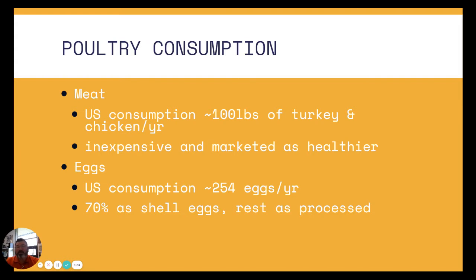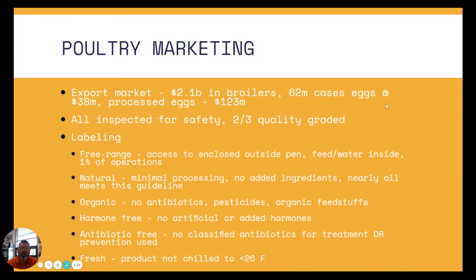Eggs — right now in the U.S., we look at about 254 eggs per capita consumption per year. About 70% of those are shell eggs, and the rest are processed, where you might have an omelet prepared on a sandwich that you bought at a fast food restaurant or something of that nature. The export market, when we talk about poultry marketing, is about $2.1 billion in broilers, 62 million cases of eggs, about $38 million a year, and about another $123 million in processed eggs. All of them must be inspected for safety, and about two-thirds of all eggs sold are graded for quality.